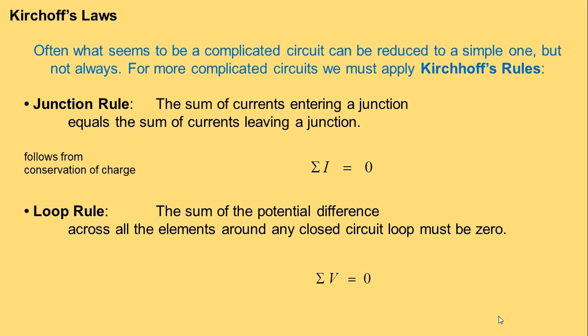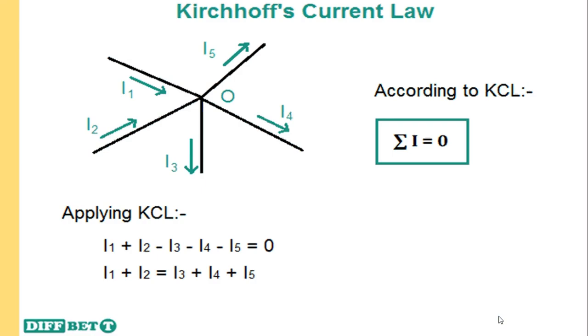Similarly, the loop rule says the sum of potential differences across all elements around any closed circuit loop must be zero — the sum of all potentials around a closed loop must equal zero. Remember that the loop rule is associated with the law of conservation of energy. Kirchhoff's Current Law is also known as KCL or the junction rule.